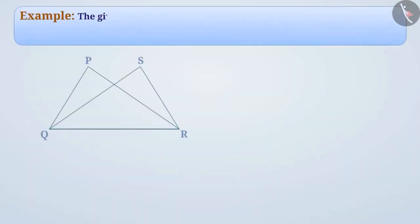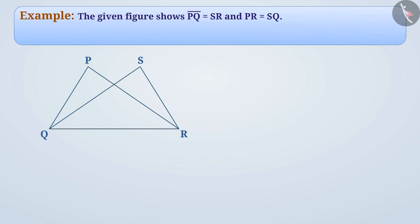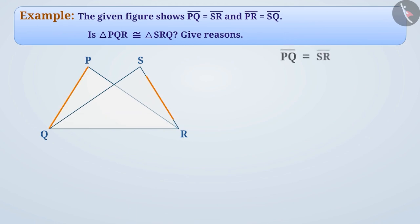The given figure shows PQ is equal to SR and PR is equal to SQ. Is triangle PQR congruent to triangle SRQ? Give reasons. We are given that in triangle PQR and triangle SRQ, PQ is equal to SR and PR is equal to SQ. We can also see that the side QR is common in both triangles.